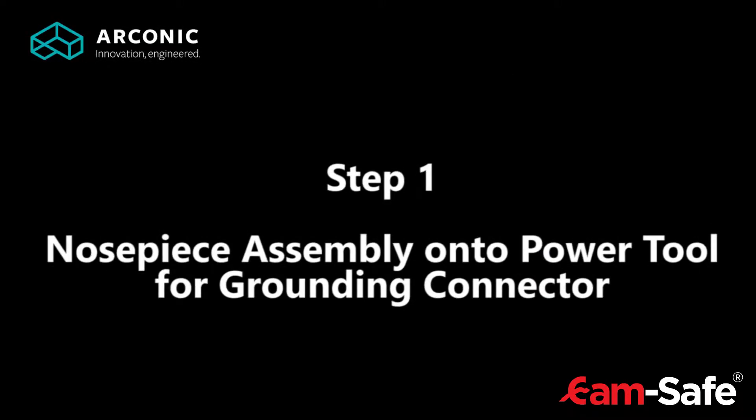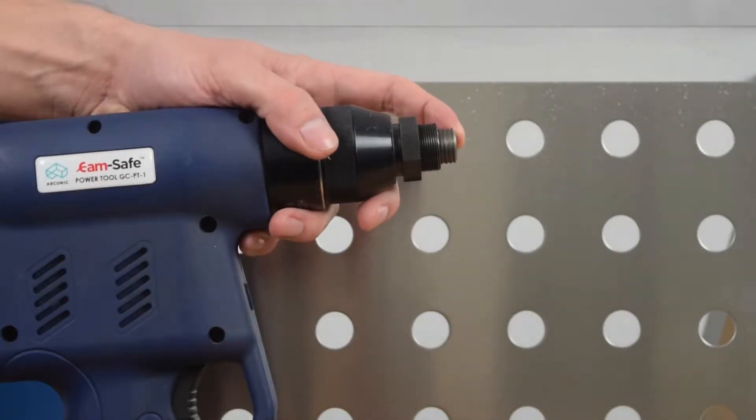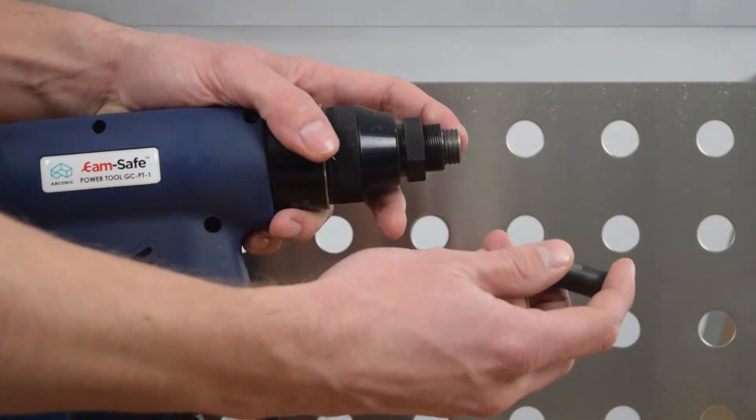Step 1: Nosepiece assembly onto the power tool for the grounding connector. Push back the spring guided driving sleeve while screwing in the mandrel.